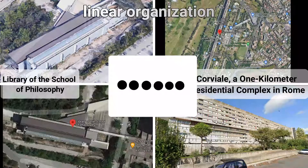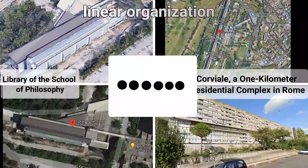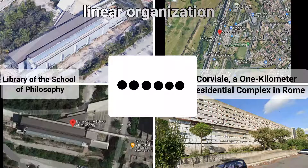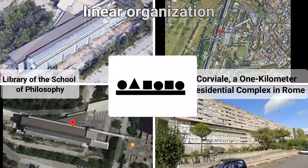The second spatial organisation is linear organisation. It consists of a series of spaces arranged sequentially in a row. It might be a series of spaces that are similar in size and form if they are for the same function, or these spaces might have different sizes and forms depending on the type of functions or the site context. But we need a single linear space bringing them together.